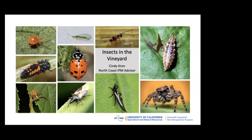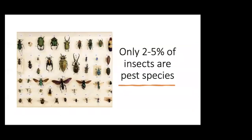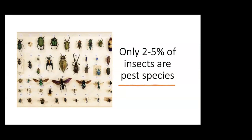Today I'm going to talk about insects in the vineyard. To get started, I want to share this piece of data: only two to five percent of insects are pest species. I get a lot of concern about insects being around people in the vineyard and in orchards and other crops. There is a misconceived notion that all insects are bad, but in reality only two to five percent are considered pest species of crops. The rest would be considered neutral or beneficial insects.